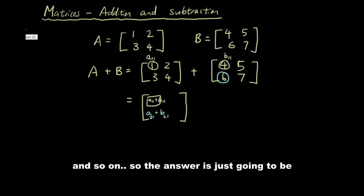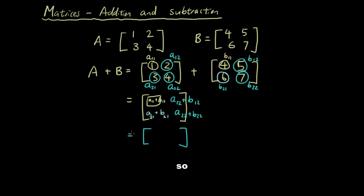So the answer is just going to be, I'm just going to write down the answer. So the answer is going to be 1 plus 4, which is 5, 2 plus 5, which is 7, 3 plus 6, which is 9, and 4 plus 7, which is 11.